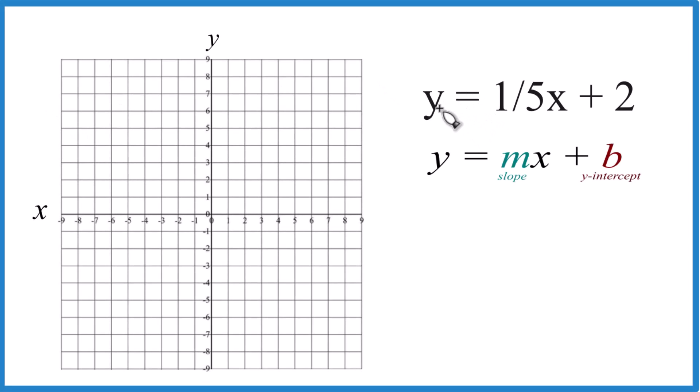Let's graph this equation here. We have y equals 1 fifth x plus 2. We're going to use slope-intercept form. You could use a table of values as well. You get the same answer.